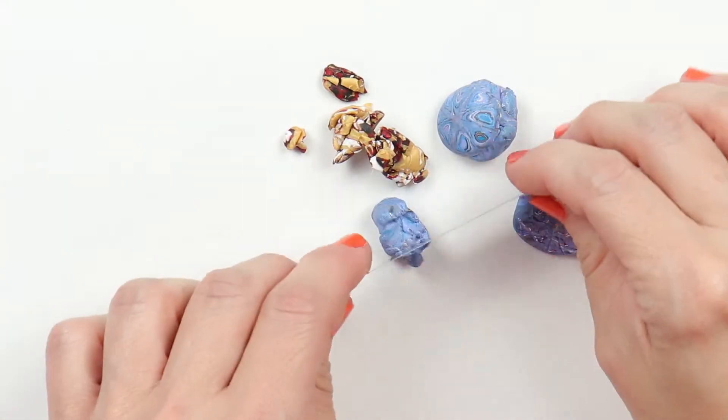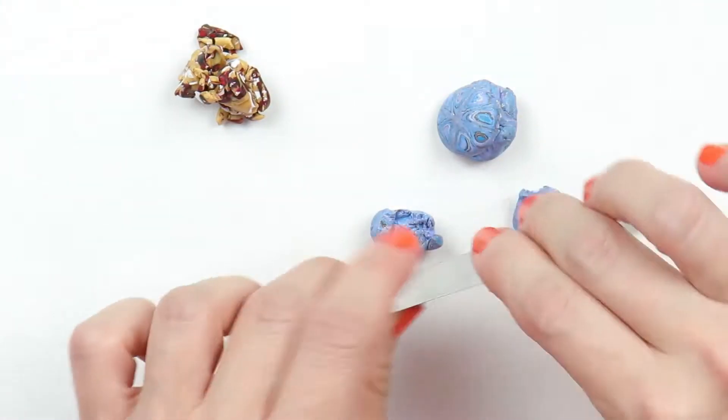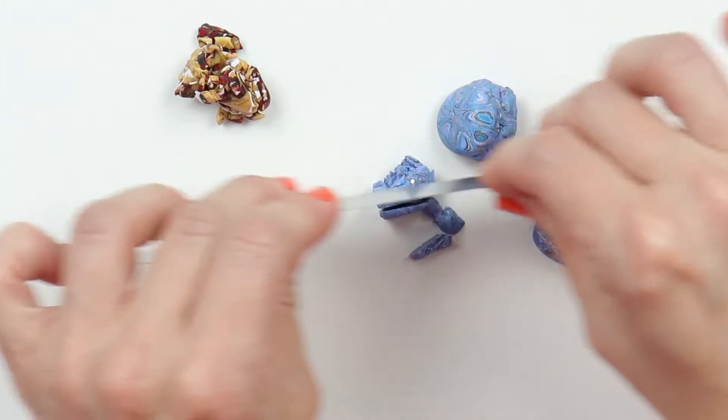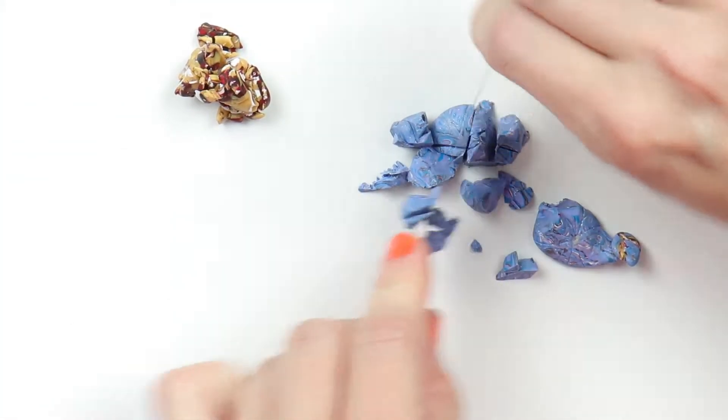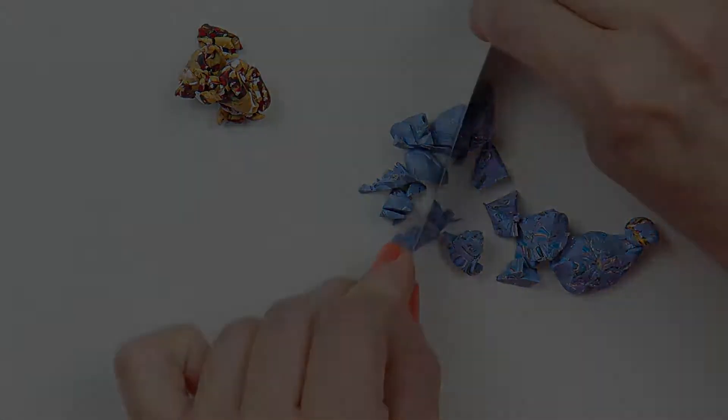I'm using scrap clay to make this project. Pick out two colors and then chop them up. You can chop them up into whatever size pieces you would like. I prefer to have mine a little bit larger for this project.